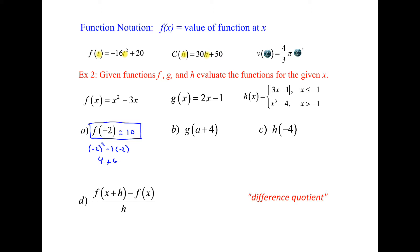On the second one, g of a plus four. It doesn't have to just be a number — you're still going to take this entire expression and plug it in for every x value for function g. So instead of two times x, now it's two times the quantity a plus four, minus one. You distribute to get 2a plus eight minus one, which is 2a plus seven. So g of a plus four is equal to 2a plus seven, and I want to see that whole expression as your final answer.